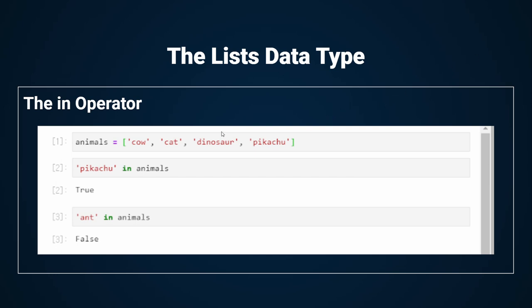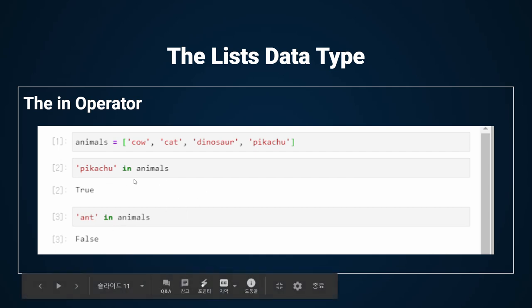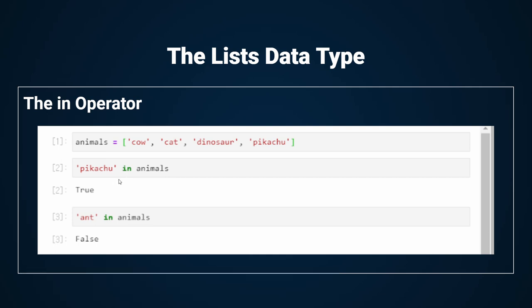I have a list containing four animal variables: cow, cat, dinosaur, pikachu. Let me check if this is true — 'pikachu in animals' returns True, and 'and in animals' returns False. So did you get it? We are going to use the in operator to make our code check whether the player guessed the words correctly.